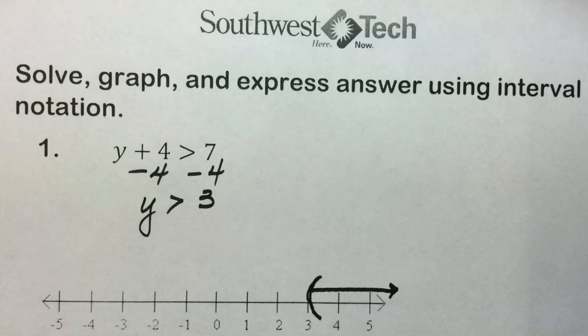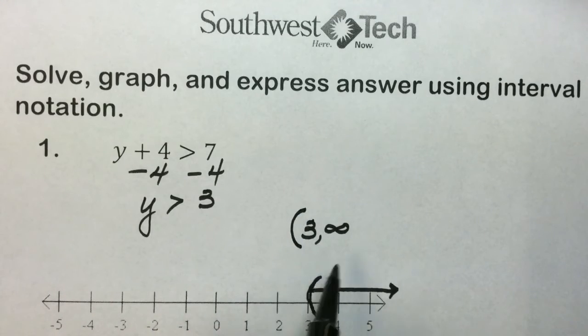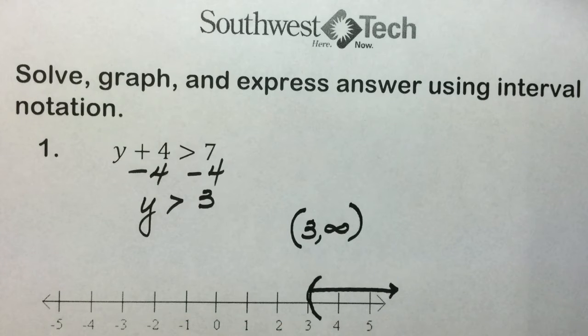The equivalent interval notation is smallest value first, largest value, which is infinity, recognizing that infinity never ends. We are not including three, so we have a parenthesis to indicate that. And infinity never ends, so we have a parenthesis on that as well. Here we have an equivalent interval notation for our solution.